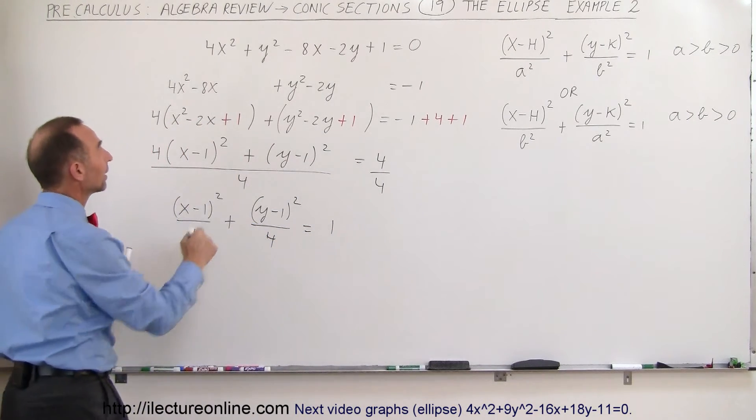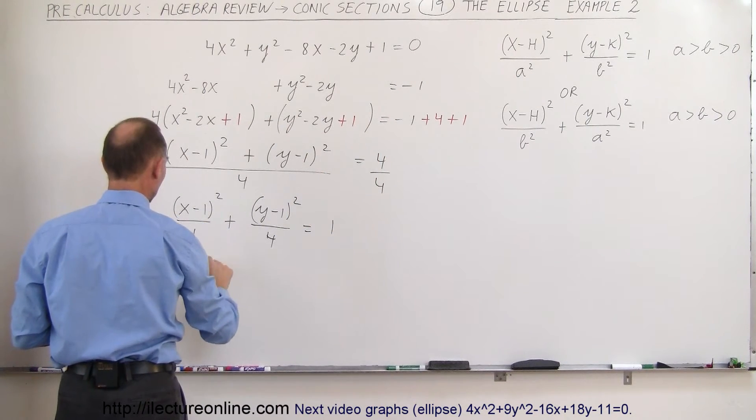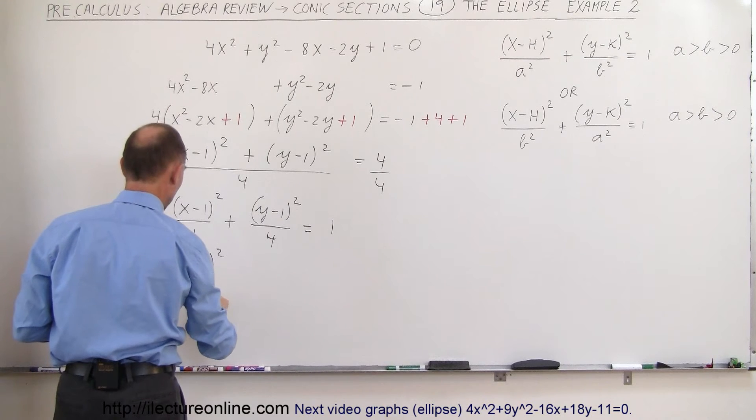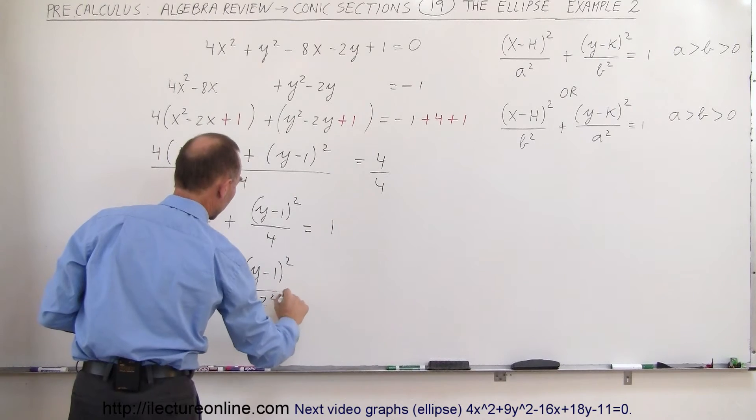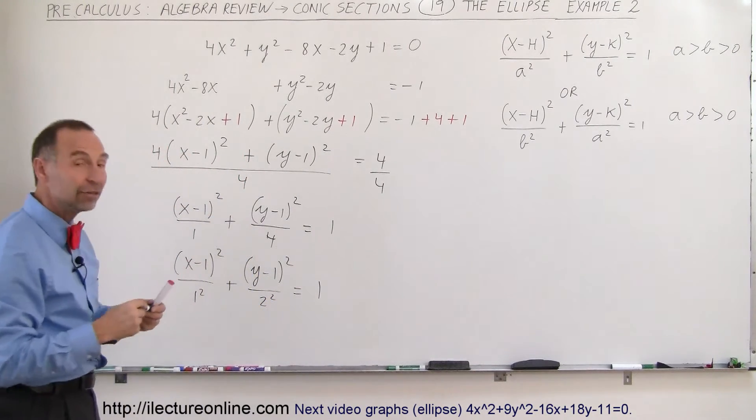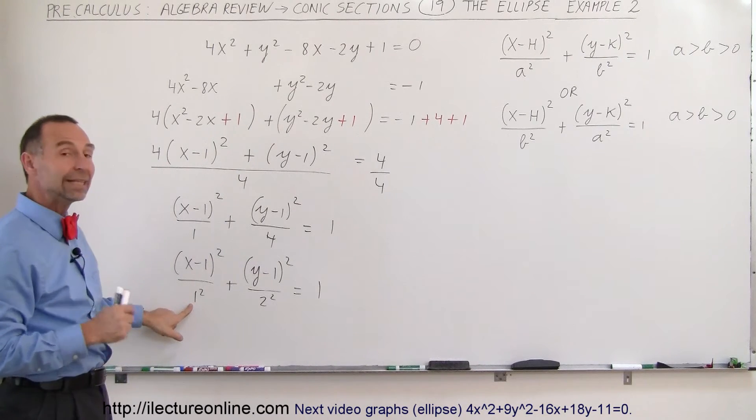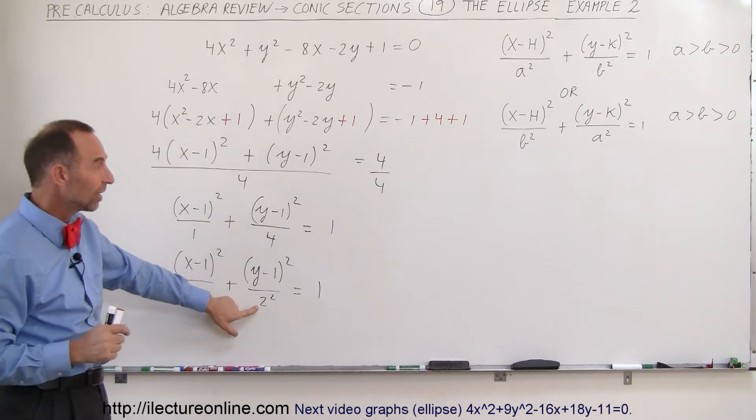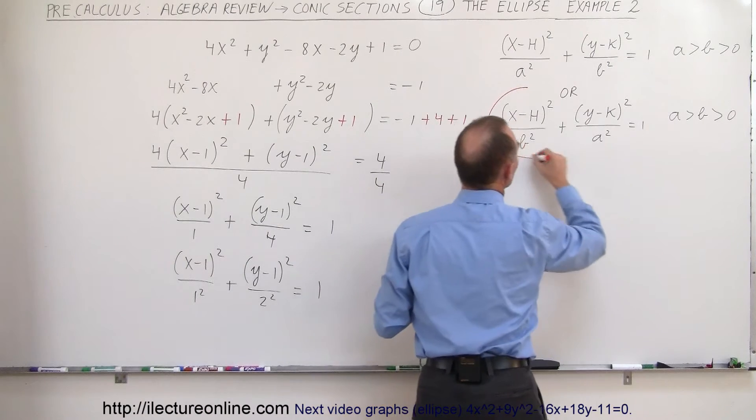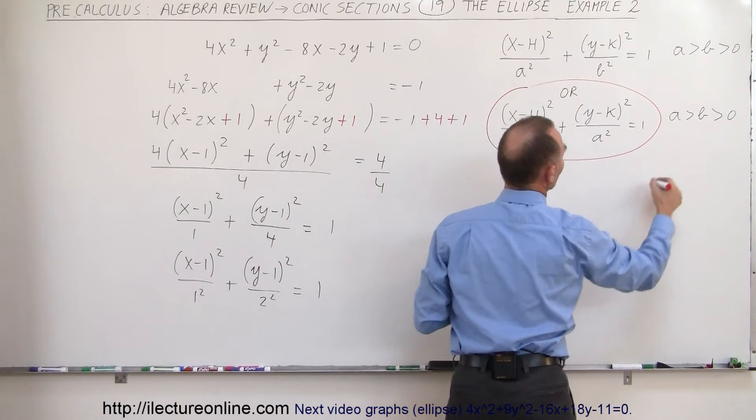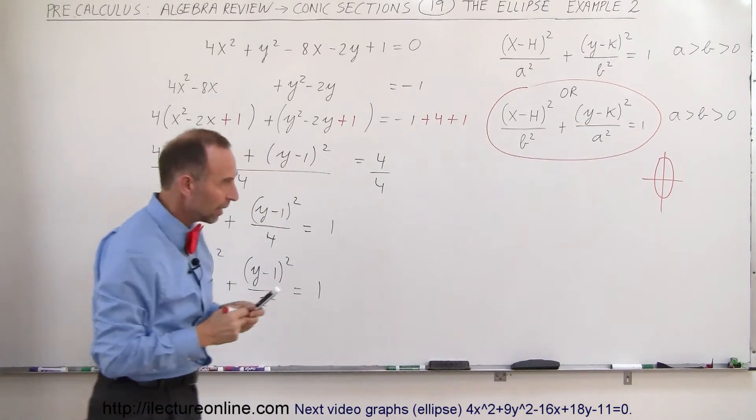This becomes x minus 1 quantity squared divided by 1 plus y minus 1 quantity squared divided by 4, and that equals 4 over 4 which is 1. Finally I'm going to write it in this form with the denominator quantity squared, so this can be written as x minus 1 quantity squared over 1 squared plus y minus 1 squared over 2 squared equals 1. Now I have it in the form that I see on the right side. Which is bigger, the denominator underneath the x term or the denominator underneath the y term? In this case it's the denominator underneath the y term, so the ellipse will be drawn something like that. It'll be a vertical ellipse.